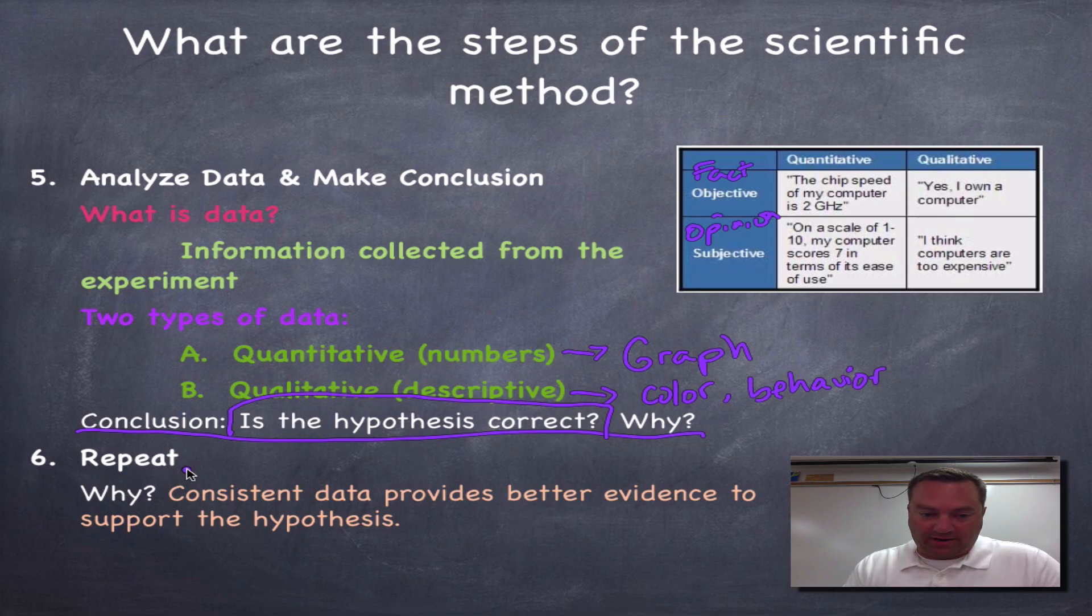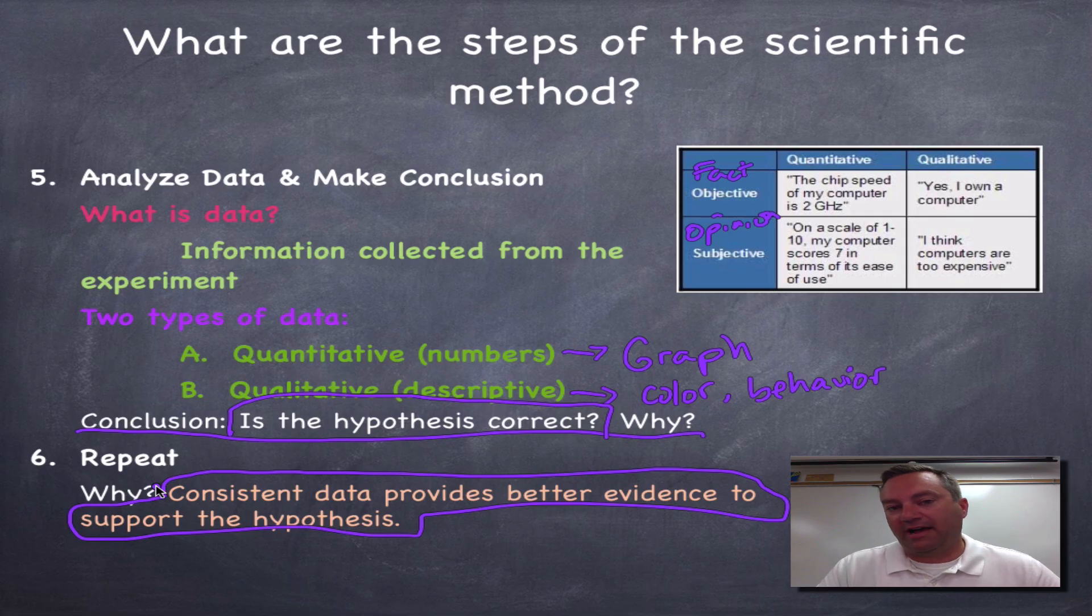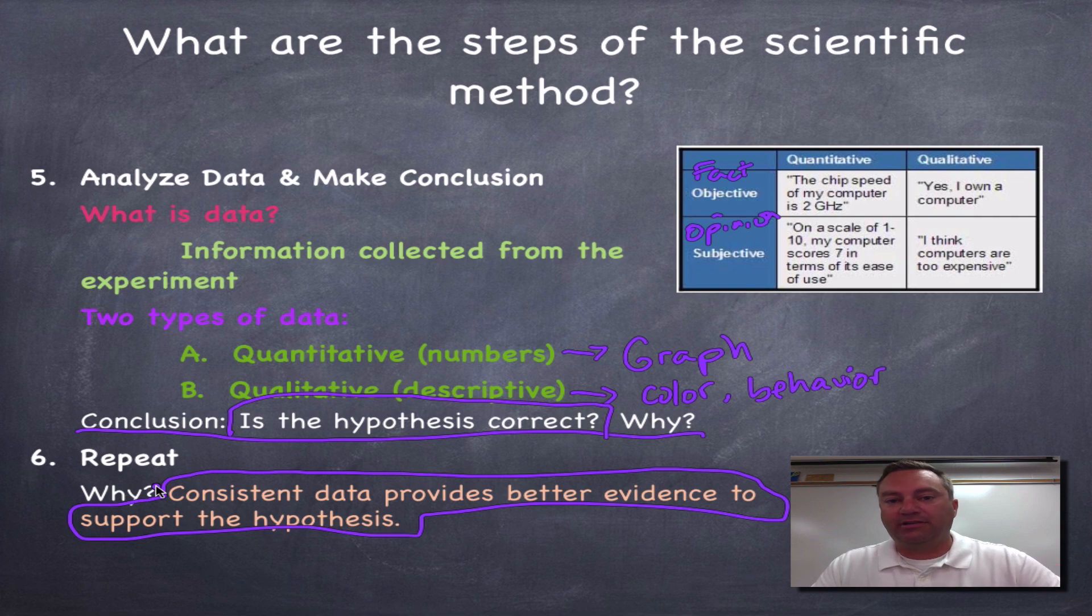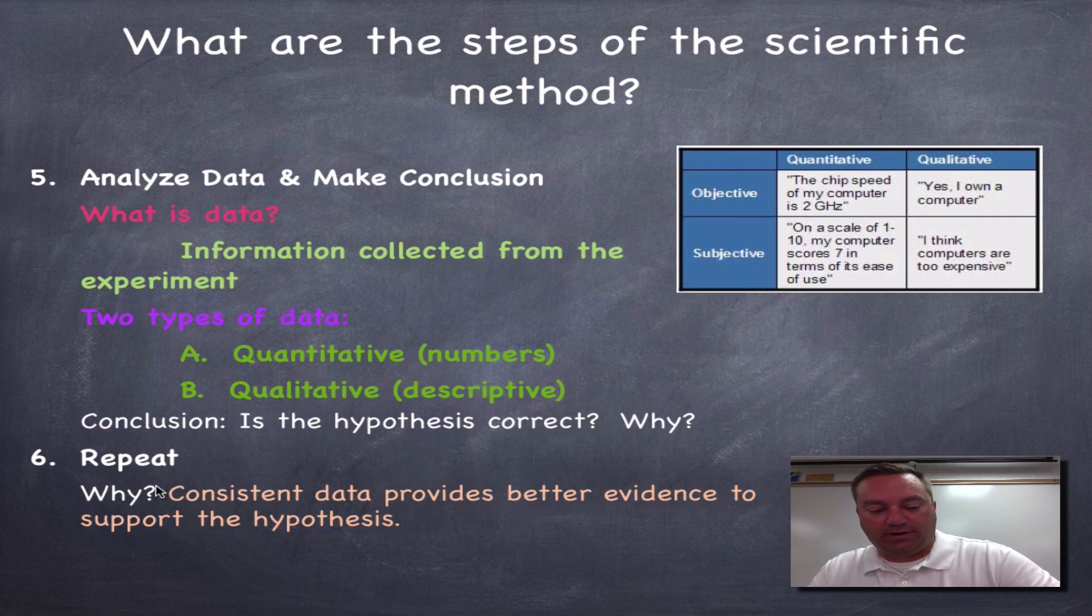Why would I want to repeat my experiment? Well, consistent data provides better evidence. We want to make sure that what we got in our data was not a fluke. It should not be a one-time occurrence. This should happen time and time and time again. That really supports your ideas.